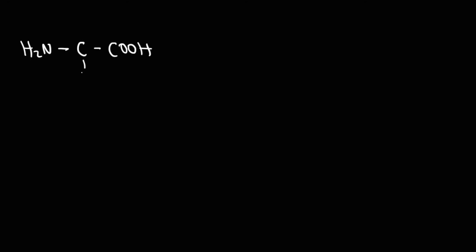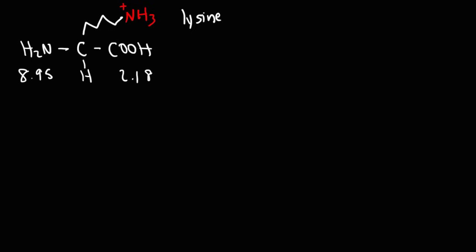Now let's work on another example for practice. Here is another amino acid. Like all amino acids, it has a carboxylic acid functional group, an amino group, a hydrogen atom, and the R group is an additional amino group — this is lysine. Because we have an amino group as the R group, it's going to be a basic amino acid. The pKa values for lysine are 2.18 for the carboxylic acid functional group, 8.95 for the alpha-amino group, and 10.5 for the amine on the side chain.